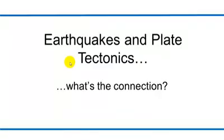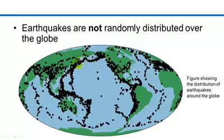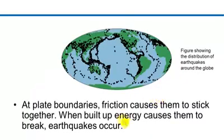So, earthquakes and plate tectonics – what's the connection? Earthquakes are not randomly distributed around the globe either. The black dots on this map of the world show where earthquake activity is occurring, and just as with the volcanoes, earthquakes are happening along the boundaries of our plates. There's lots of earthquake activity on the west coast of North and South America, along China, Japan, and Asia, and back around the edge of the Pacific plate to Australia. At plate boundaries, friction causes the plates to stick together. When enough energy is built up and causes them to break, earthquakes can occur.